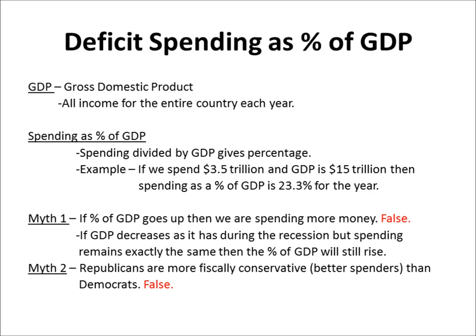Now there are a couple of myths I want to talk about for this percentage of GDP. Given one side or the other, you can take this formula and come to a lot of different conclusions. The first myth is that if the percentage of GDP goes up, then we're spending more money. If the budget goes up and GDP stays the same, that percent of GDP is going to go up — well, that's false. It doesn't automatically mean that. During the recession, GDP fell drastically. If we spend the same amount of money and GDP drops largely, then the percent of GDP is going to rise sharply without spending changing much at all.